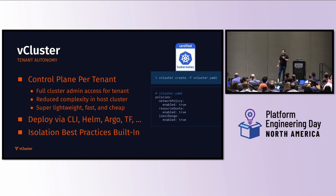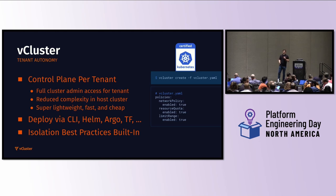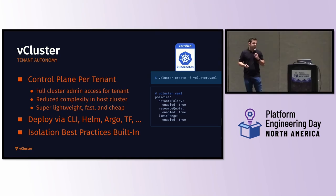With just a couple of lines of YAML in the vCluster YAML — that's our standard format to define a vCluster — you can enable network policies, resource quotas, and more to make a vCluster a little bit more isolated. You can spin up a vCluster via CLI, as you can see here in this command: 'vcluster create', just provide the vCluster YAML. Under the hood, that's really just values for a Helm chart, so you can also deploy vCluster via Helm, via Argo, via Terraform — you name it.